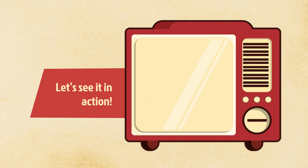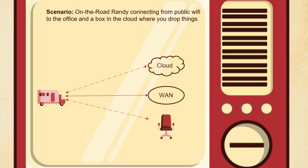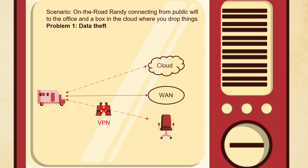Let's see it in action. We're going to talk about one scenario: On-the-Road Randy connecting from public Wi-Fi back to the office and into a cloud storage box. He's sending stuff to the office, and that data is protected from theft by the VPN — everything's encrypted, nothing readable in transit. But what about data going to and from the cloud? There's no protection if we've only got a VPN. That's where a CASB with a secure API connection — not just a proxy — protects that data too. Data theft is blocked.